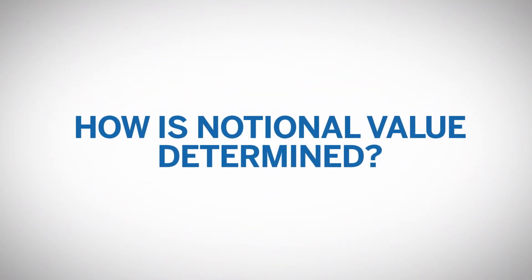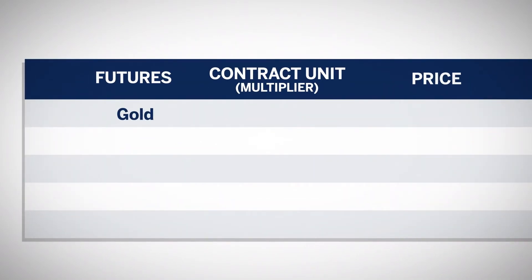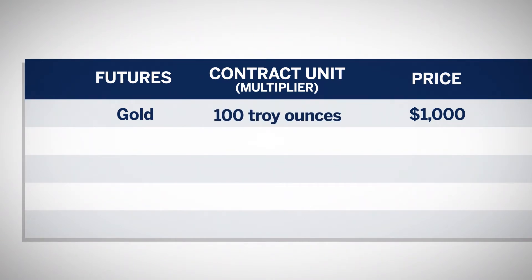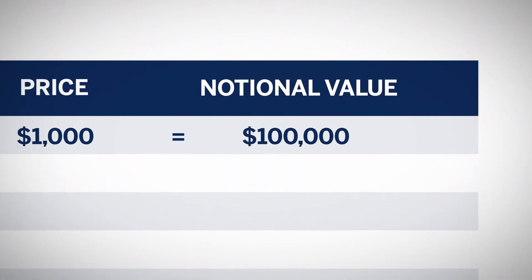Using the same contracts, how is notional value determined? Assume a Gold Futures Contract is trading at a price of $1,000. The notional value of the contract is calculated by multiplying the contract unit by the futures price — in this case, 100 troy ounces times $1,000. The notional value for this contract, at this price, would be $100,000.